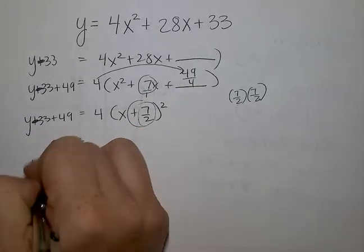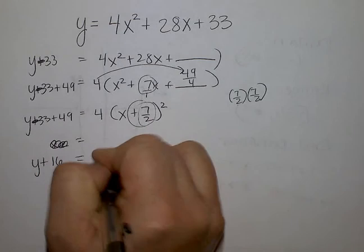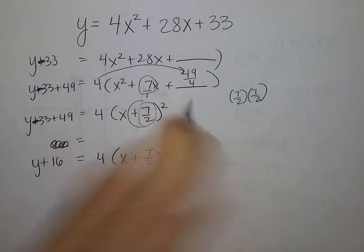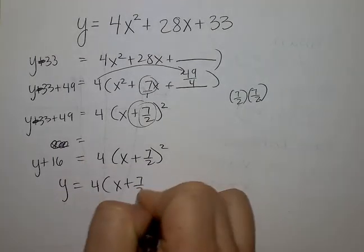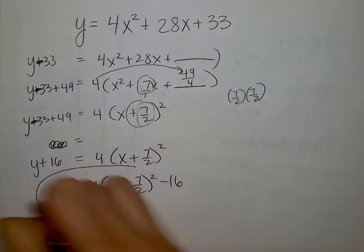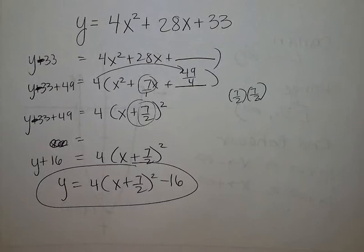So y plus 16 equals this value. Then I move the 16 back over. And this would be the factored, or vertex form, vertex form.